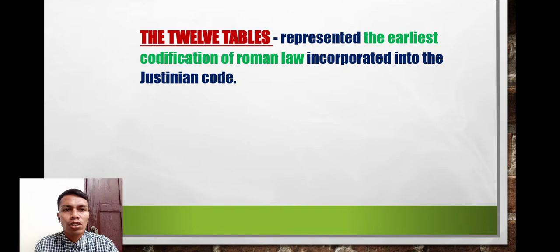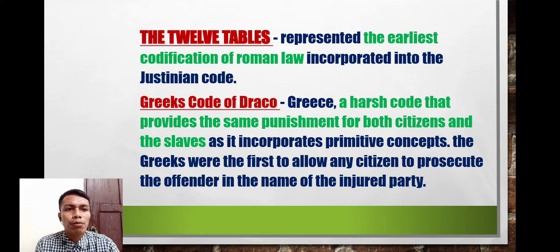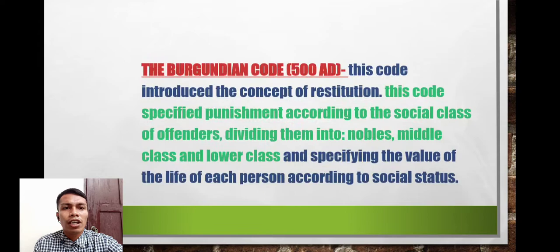The Twelve Tables represented the earliest codification of Roman law, later incorporated into the Justinian Code. The Greek Code of Draco was a harsh code that provided the same punishment for both citizens and slaves. It incorporated primitive concepts, but the Greeks were the first to allow any citizen to prosecute an offender in the name of the injured party.